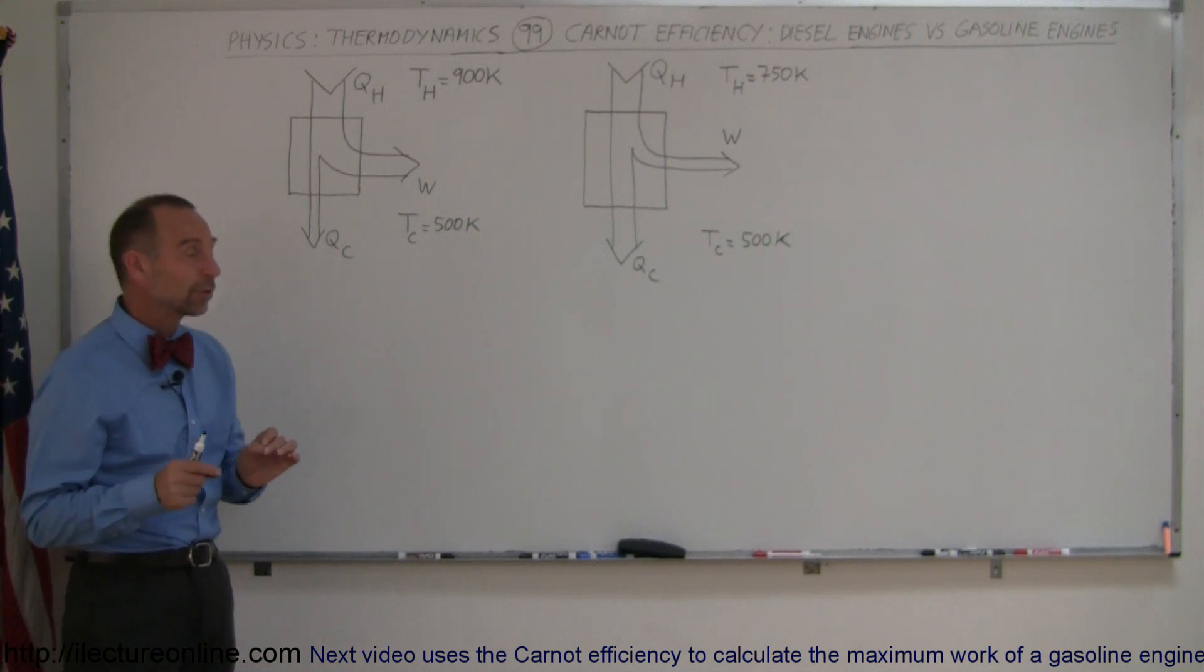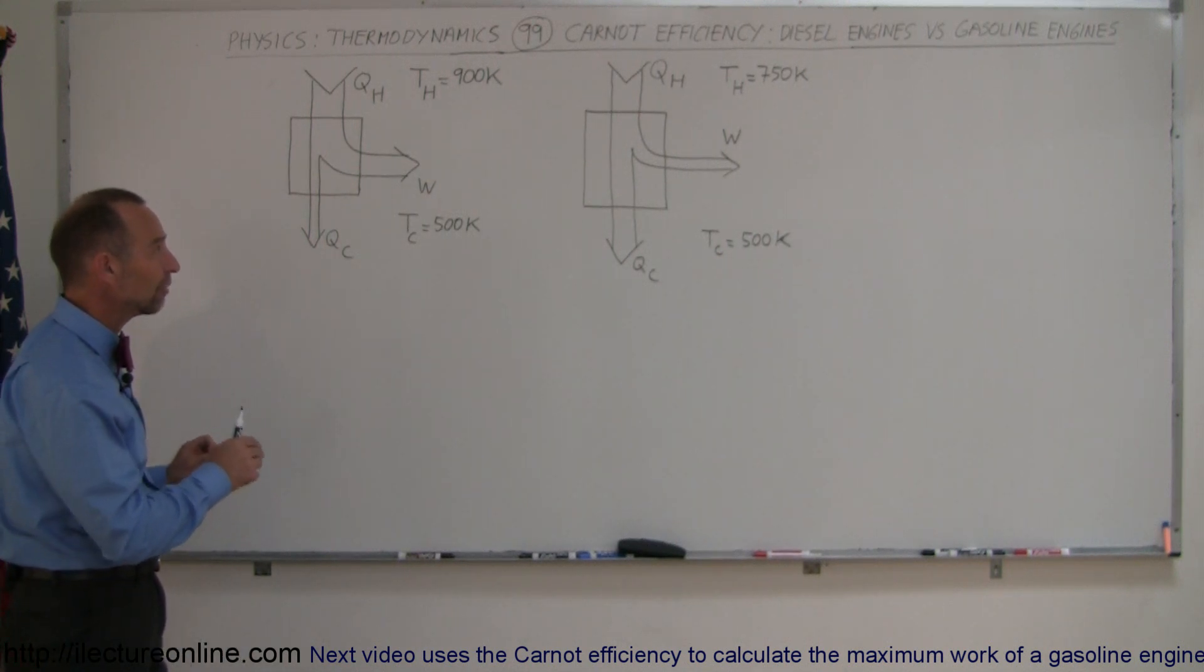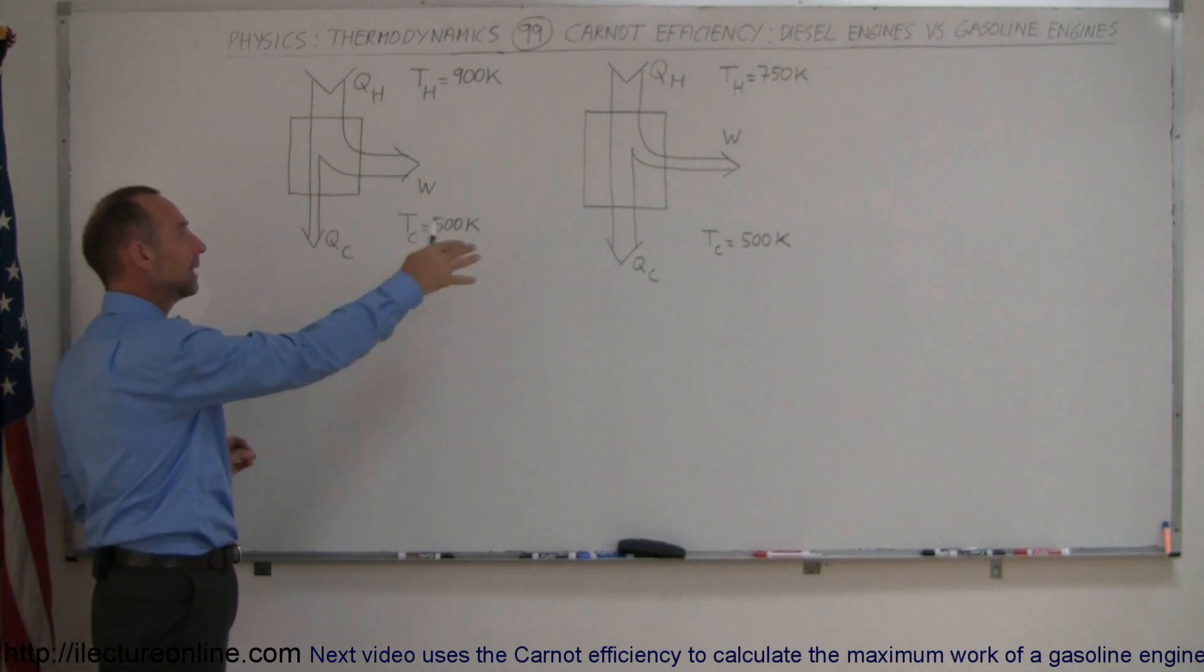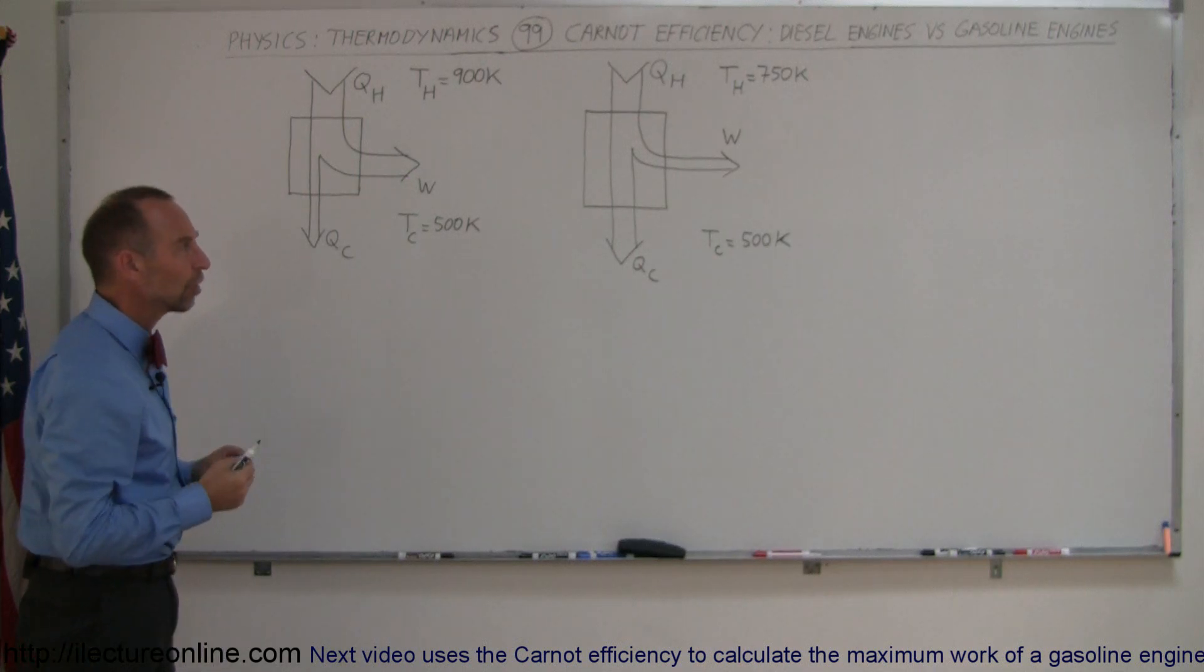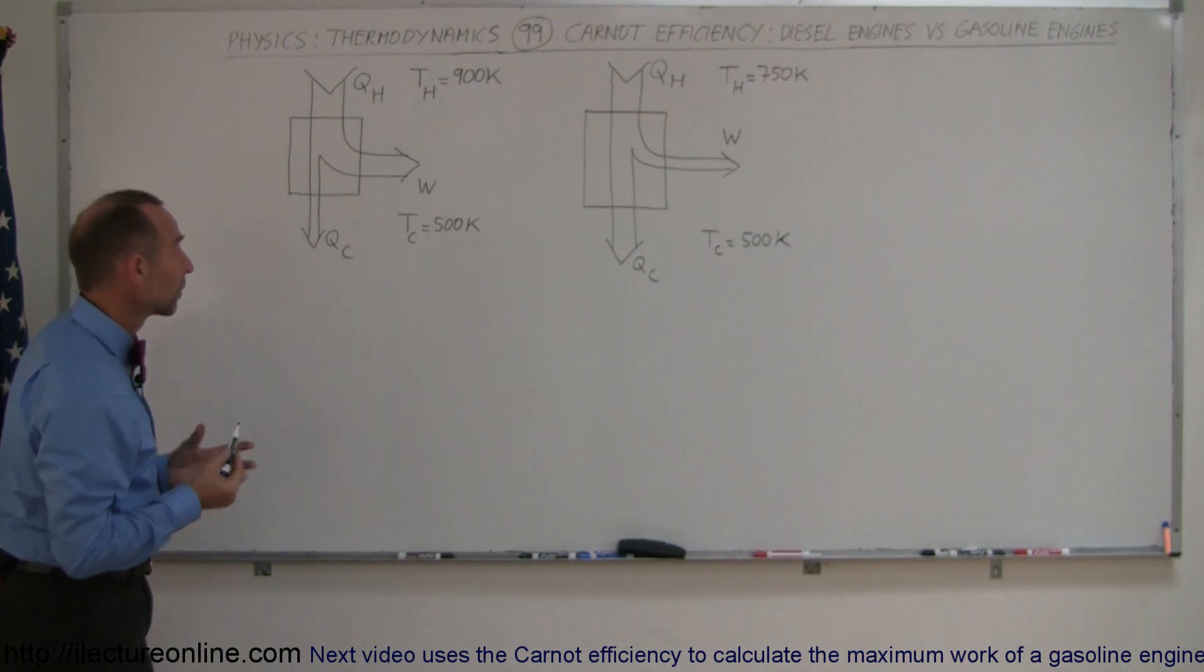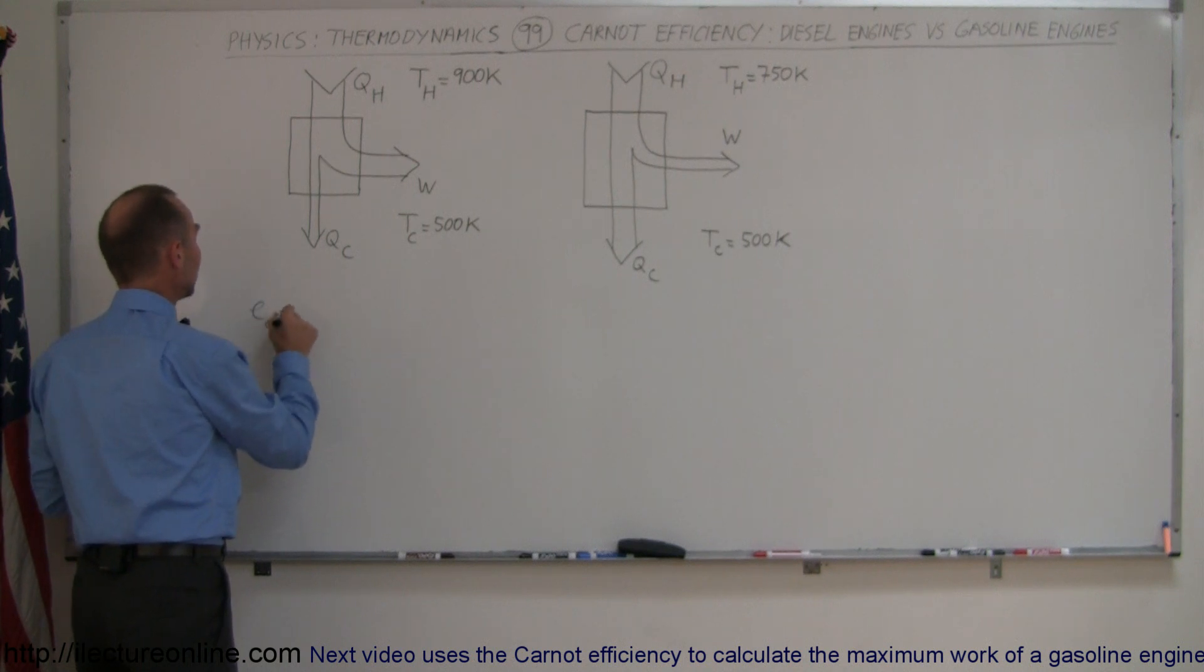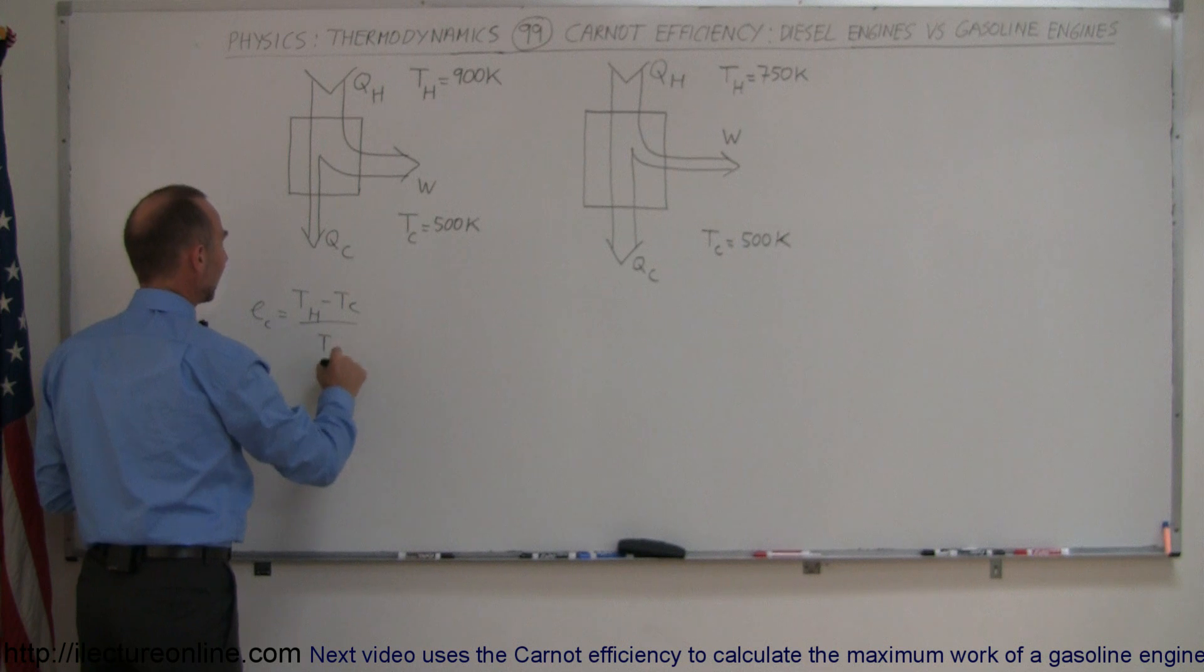We're going to calculate the Carnot efficiency of both the diesel engine and the gasoline engine, compare them to each other, and then see what that really means. The Carnot efficiency is equal to T hot minus T cold, divided by T hot.